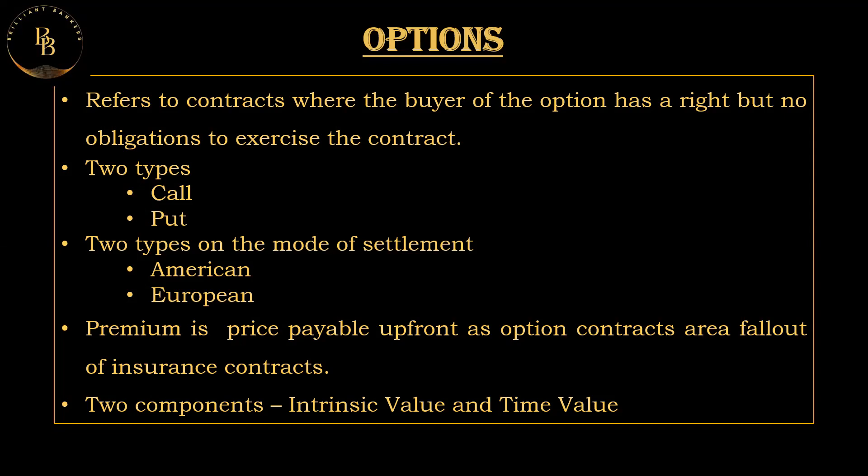For a put option: if you buy a put option for 100 shares of a company at a strike price of 800 per share, and the stock goes to rupees 700, you can use this put option to sell the shares at the agreed-upon rate of rupees 800, avoiding a bigger loss. This is how the call and the put options work.